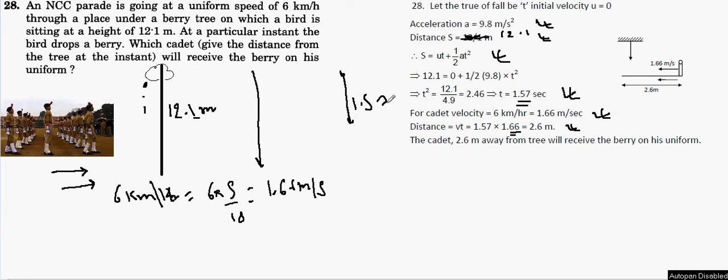Hence during this time 1.57, the berry will fall and even during this time cadets are moving along this direction. So anyone of the cadet would travel this much, like 2.6 meter distance, will receive the berry on his uniform.